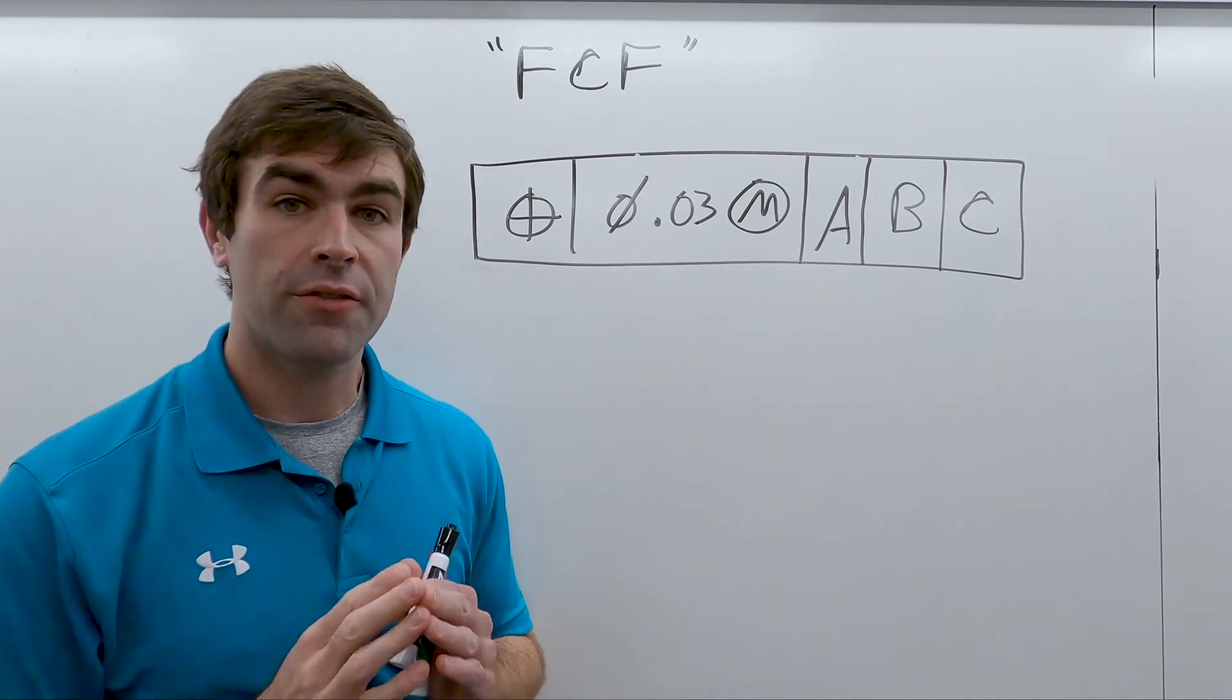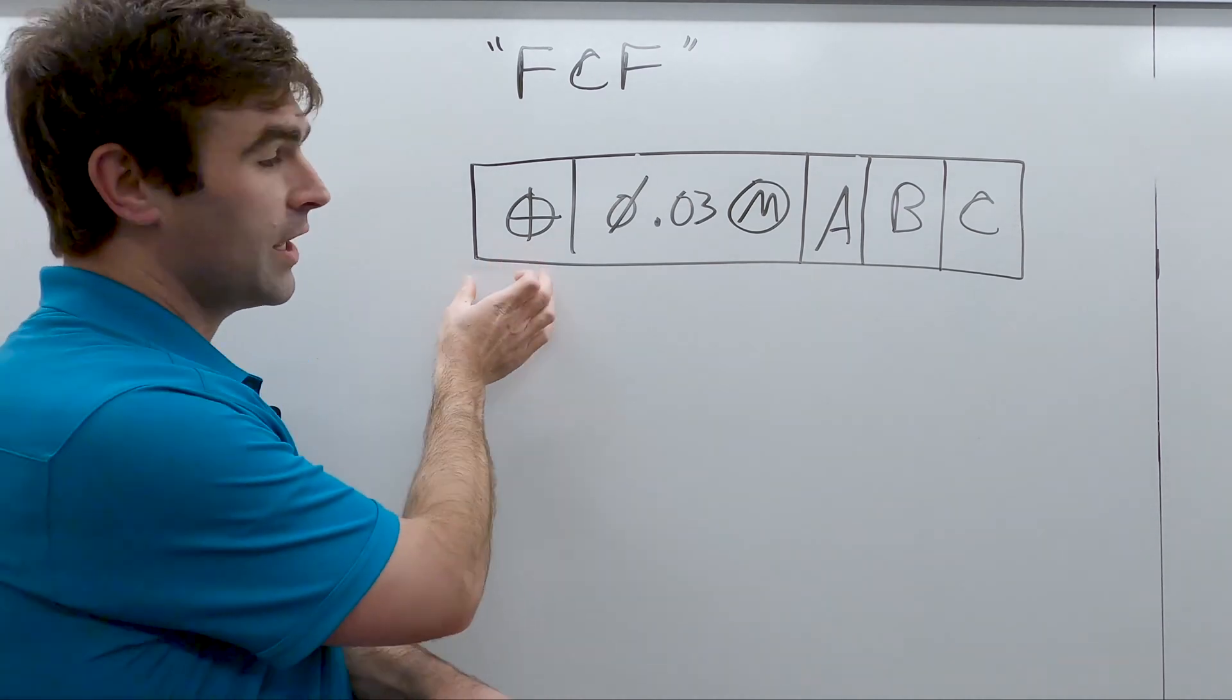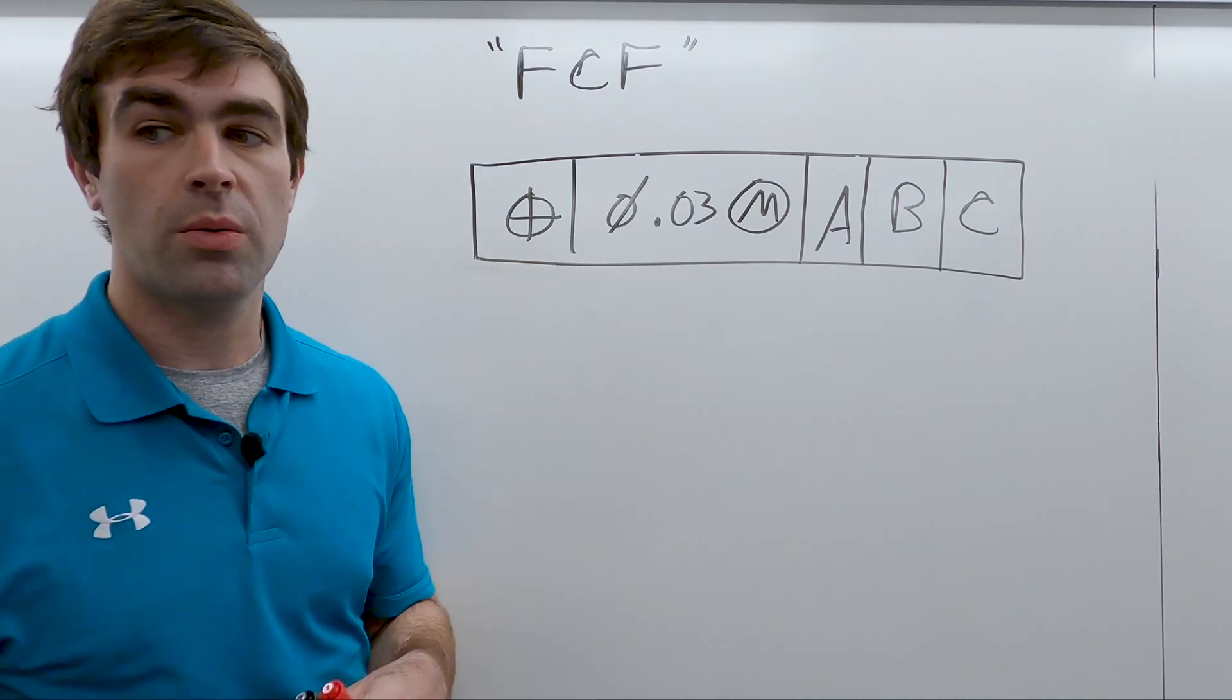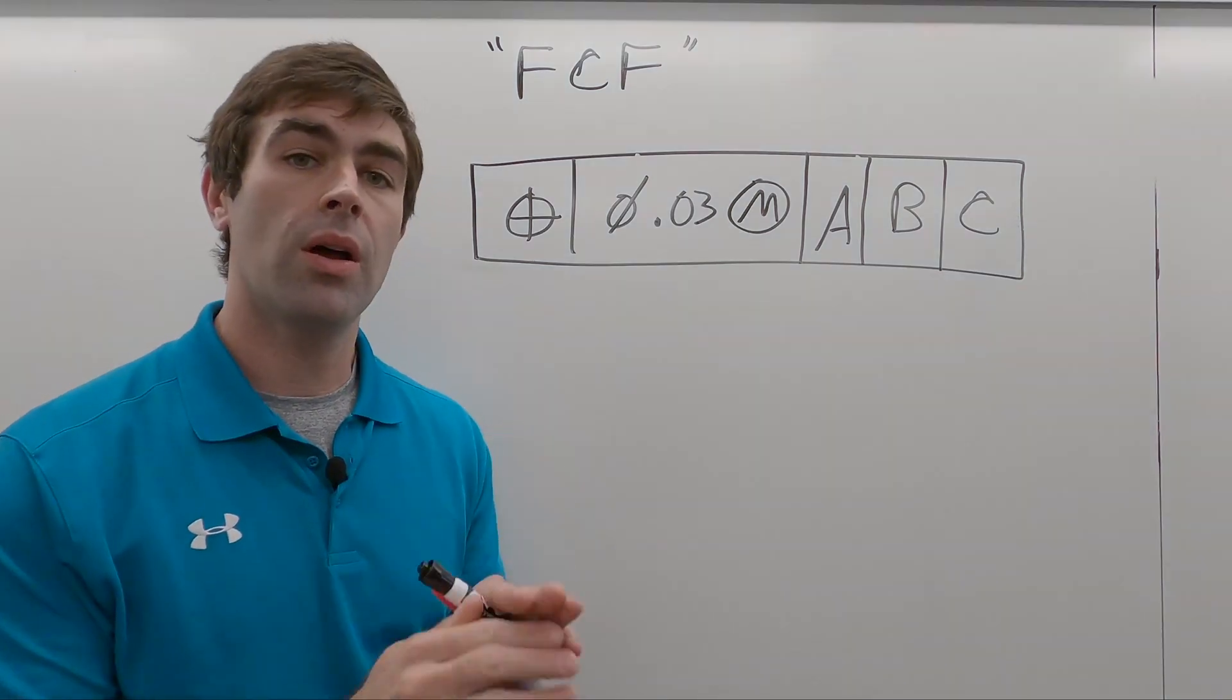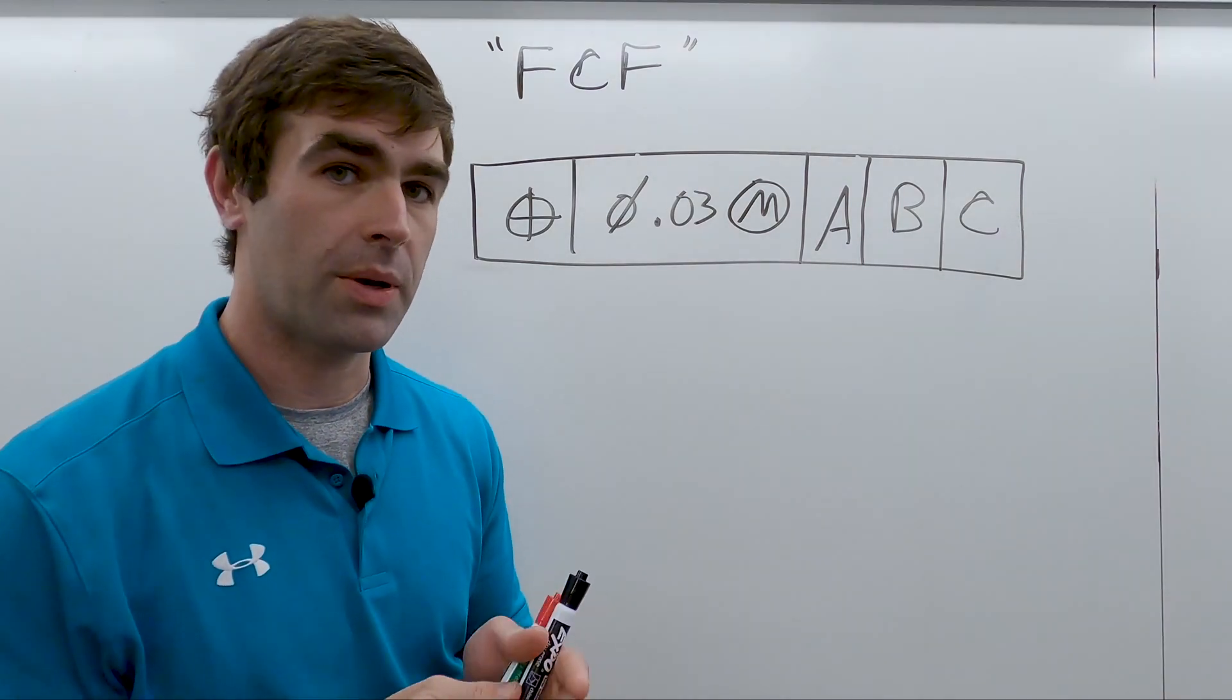So in the feature control frame, any of those can exist right here. That lets you know what you're looking for when you set up to inspect.